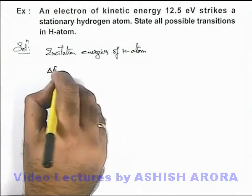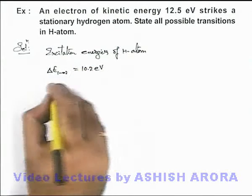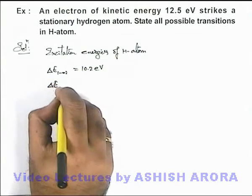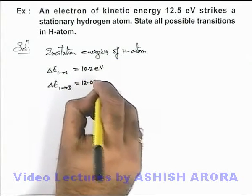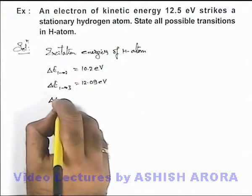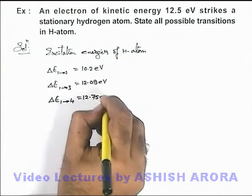Delta E for transition 1 to 2 is 10.2 electron volts. Delta E for 1 to 3 excitation is 12.09 electron volts, and delta E from 1 to 4 is 12.75 electron volts.